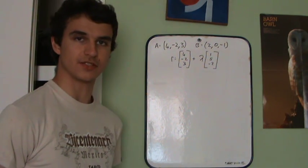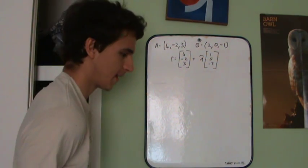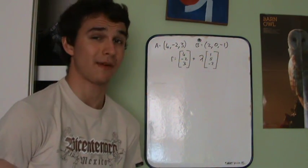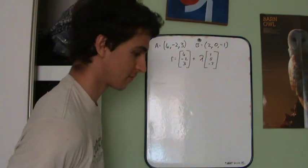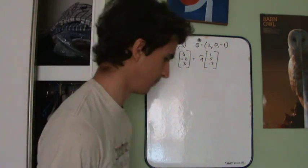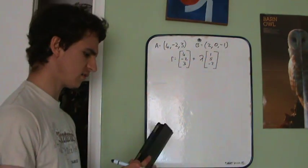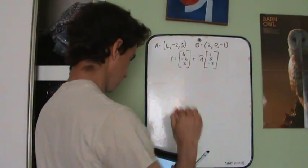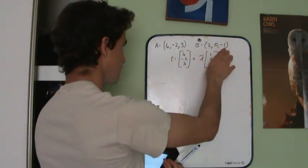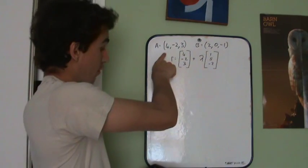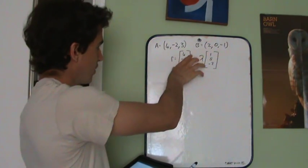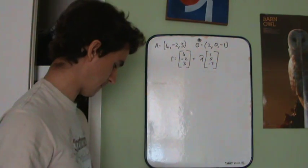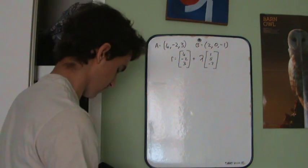Today we're going to be tackling the rectangle question. I was debating whether to do this one or the parallelogram one, but I think I can probably explain the parallelogram one in this one as well. I'm going to read you the question — I think this is January 2012. It says the points A and B have coordinates (4, -2, 3) and (2, 0, -1), and the line L passes through A and has equation (4, -2, 3) plus lambda times (1, 5, -2). The first bit starts off nice and easy.